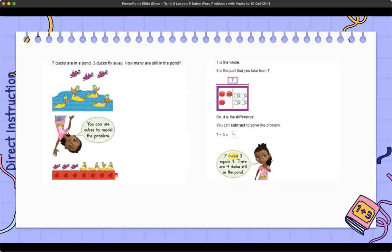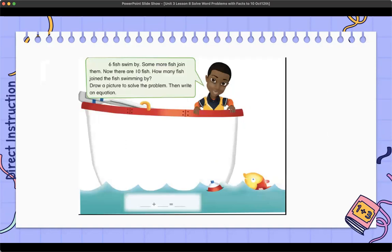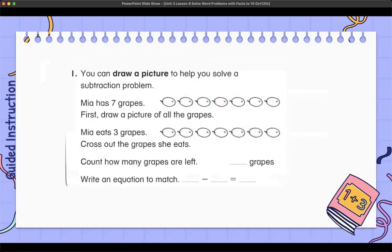Here is the direct instruction, which reiterates the previous problem. The guided instruction: you can draw a picture to help you solve a subtraction problem. So what kind of problem are we going to be solving? Your child will respond. It's always posing these back as questions. Maya has seven grapes—how many grapes does she have? Then they respond.